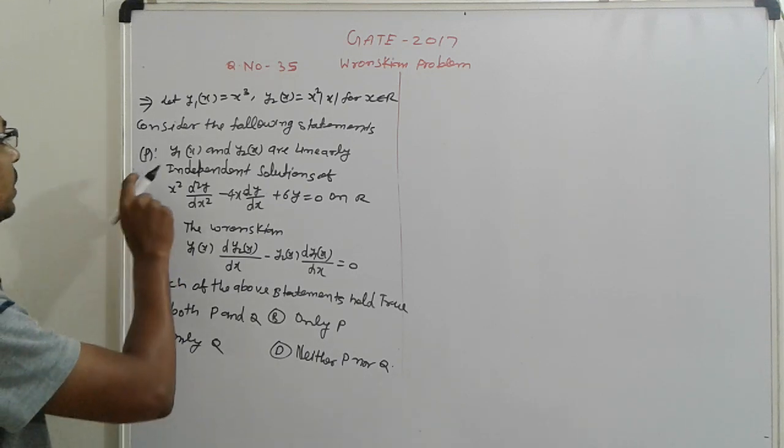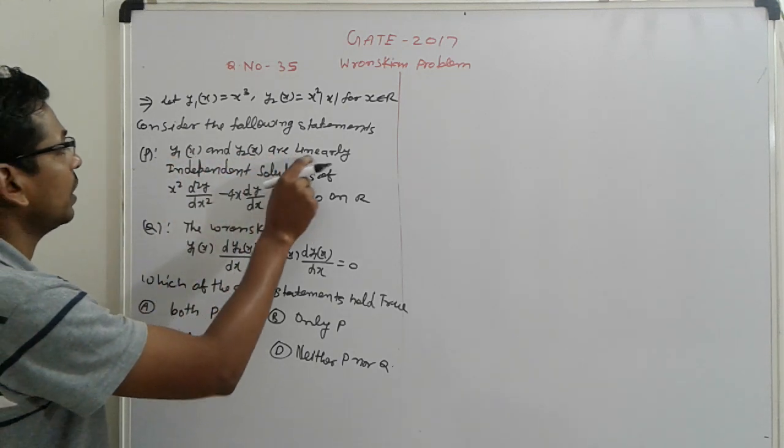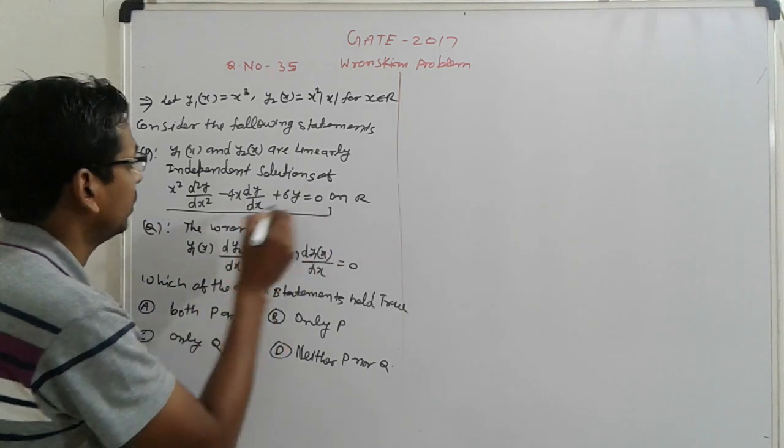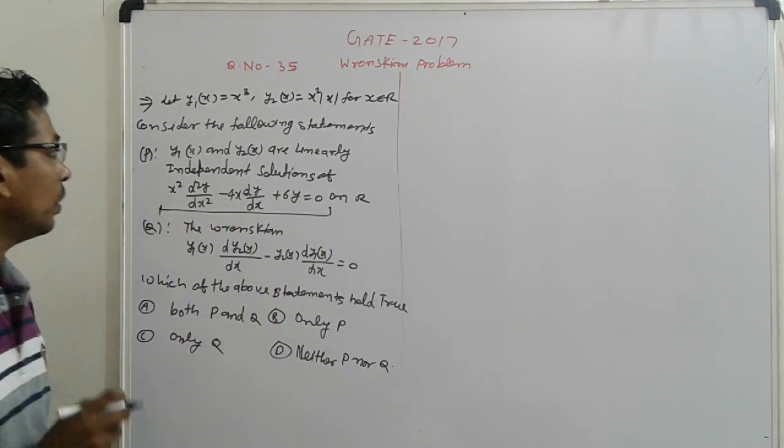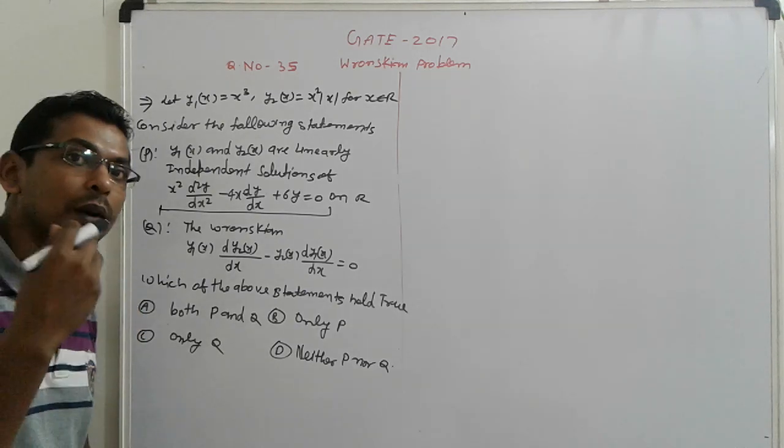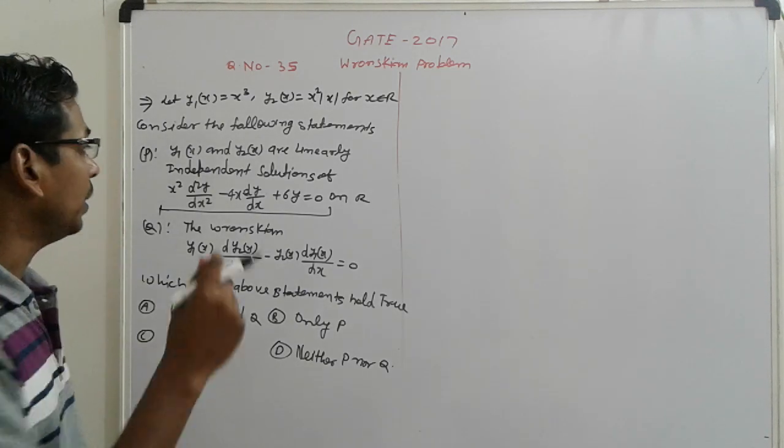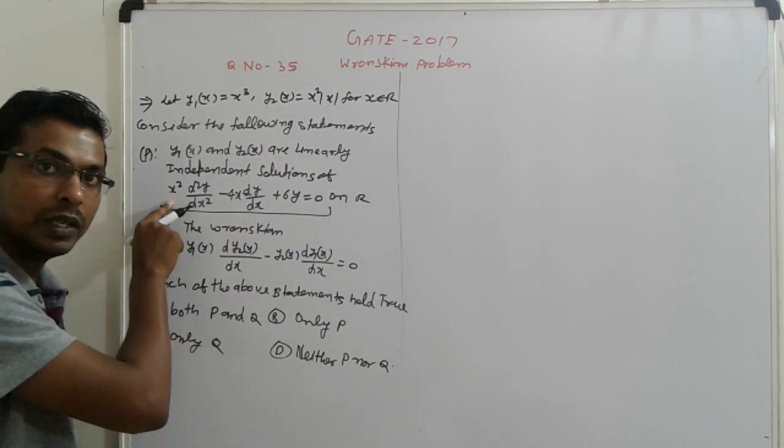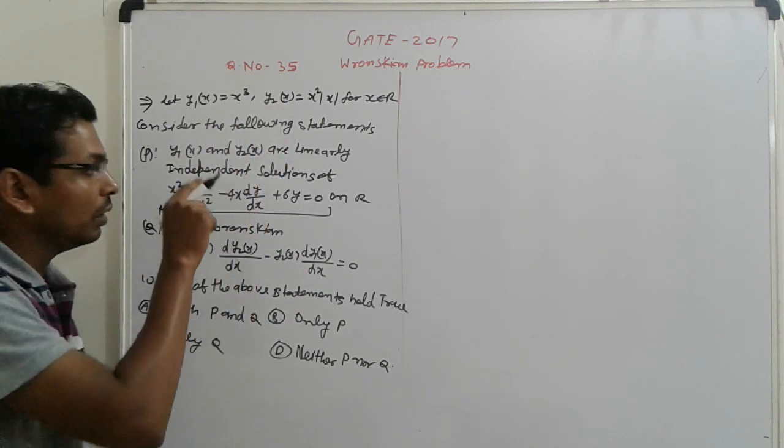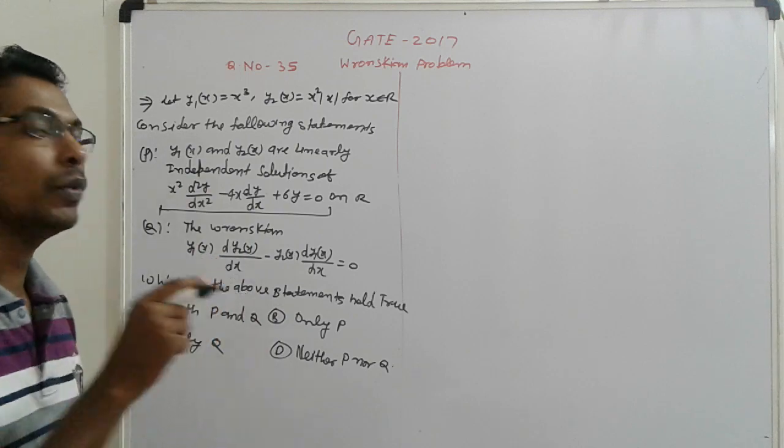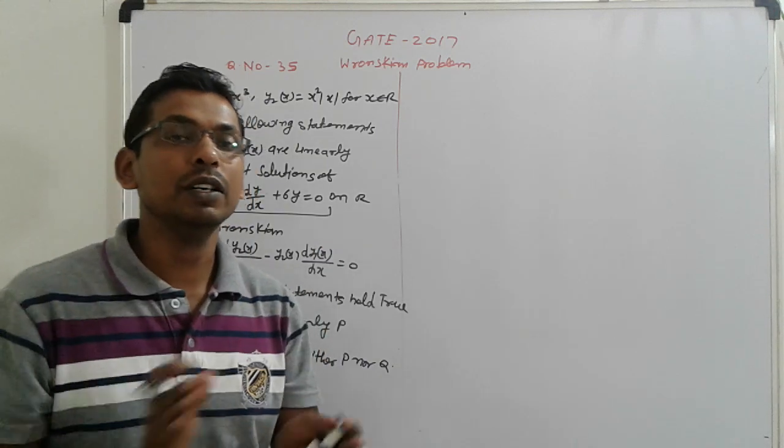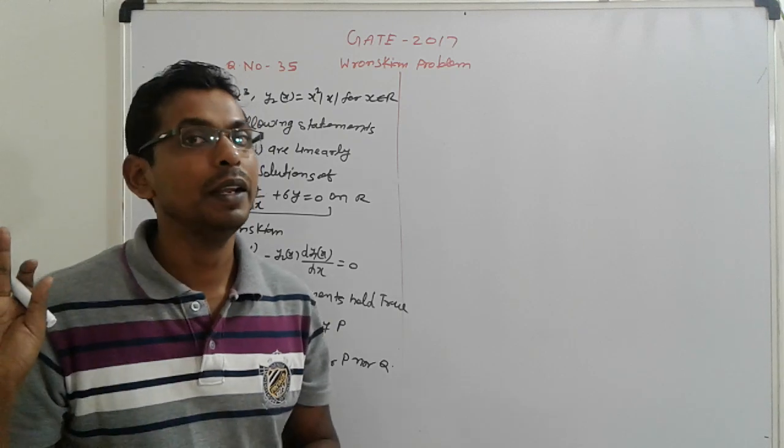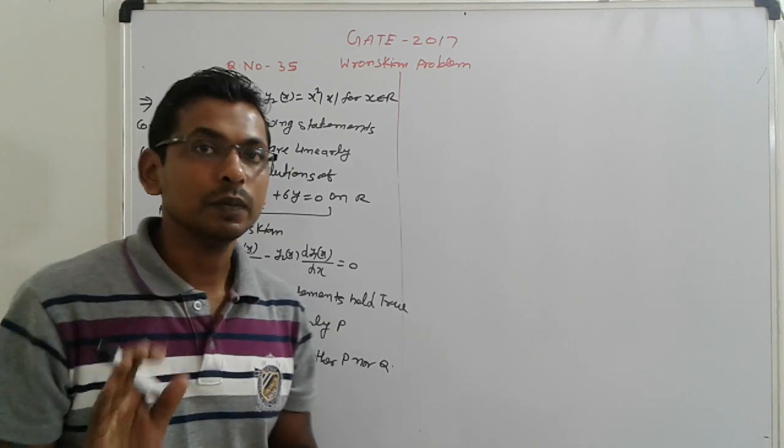First, just first observe: Y1(X) and Y2(X) are linearly independent solutions of this differential equation. First, you observe, you find out if Y1 and Y2(X) are the roots of this or not.